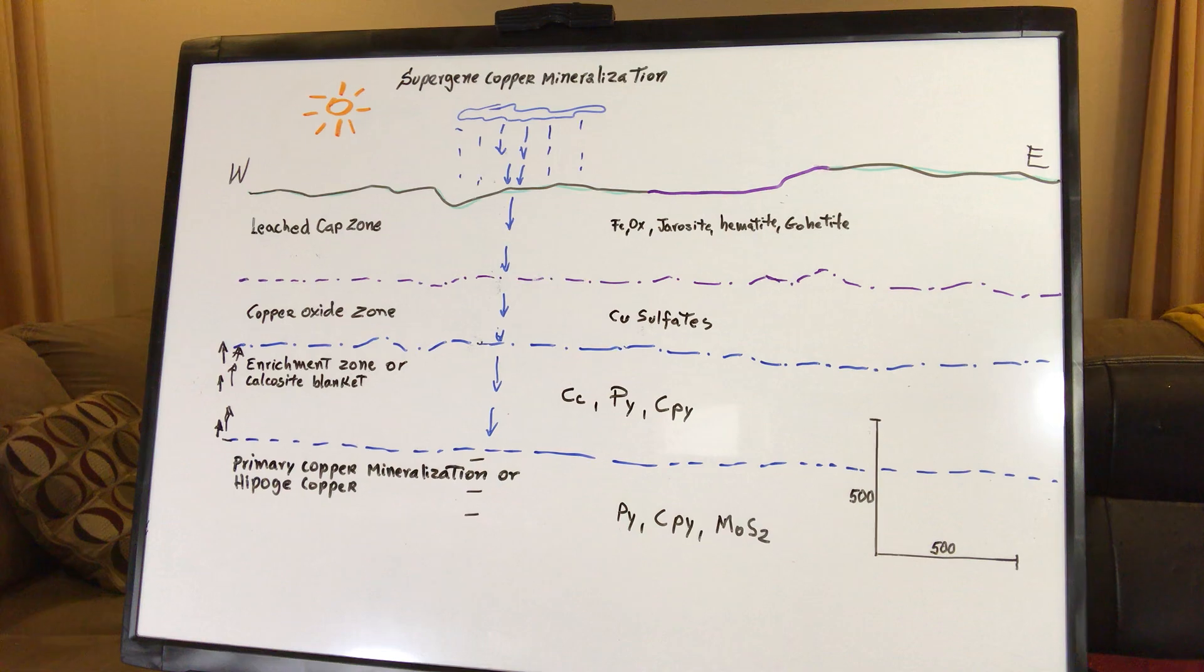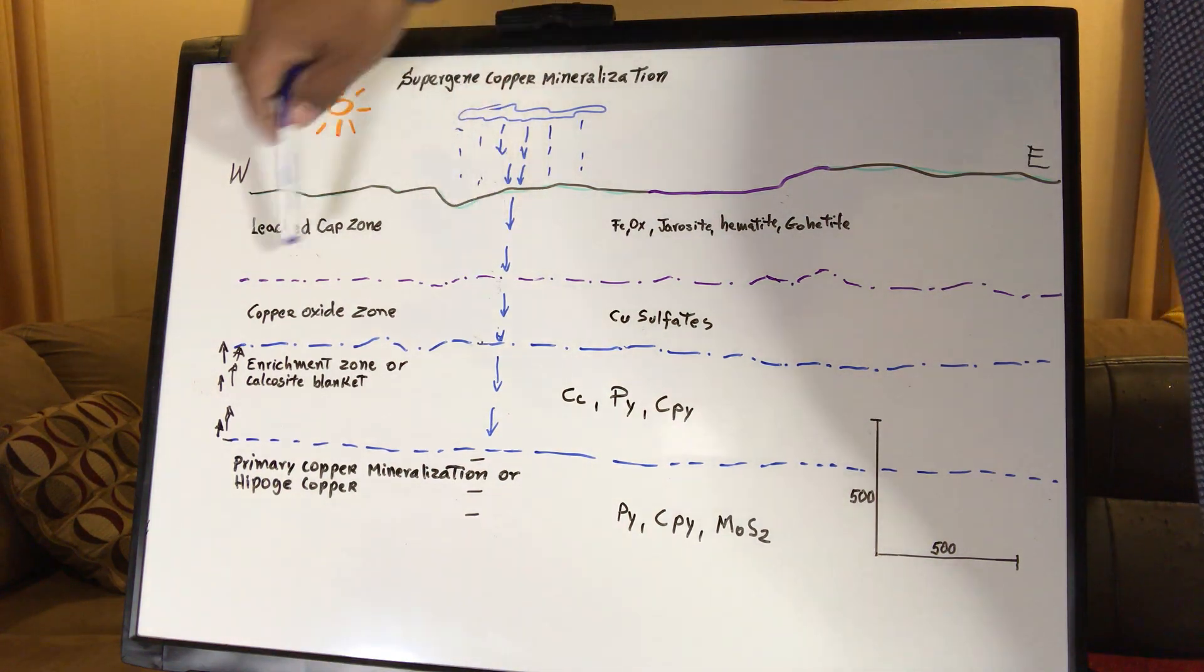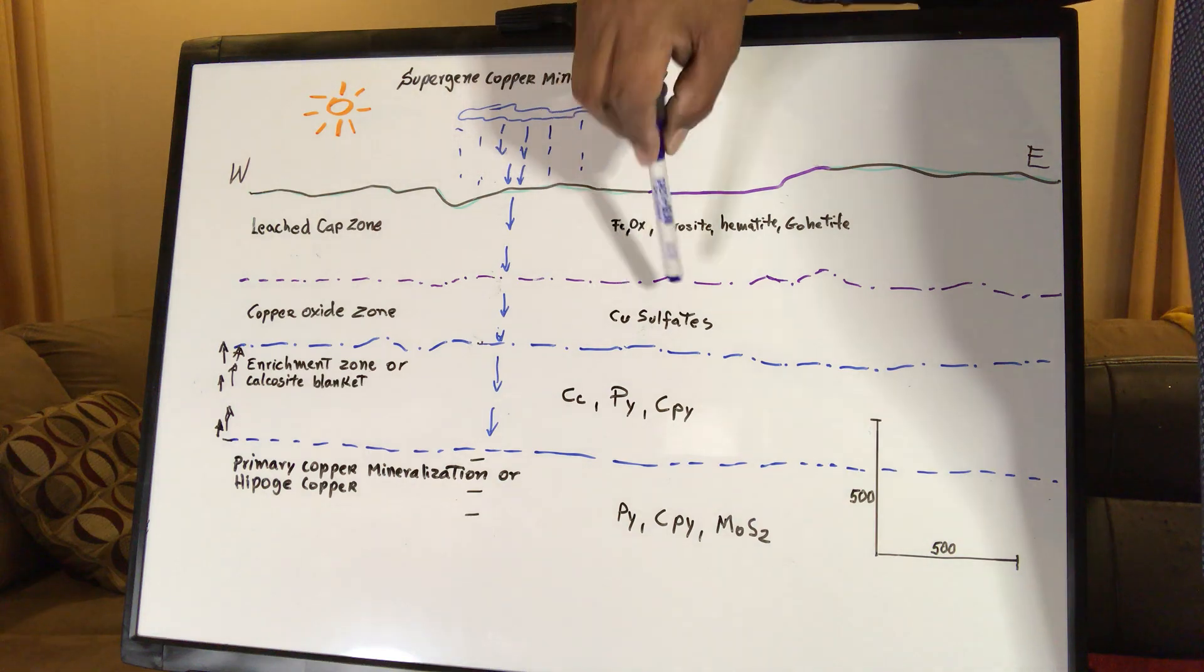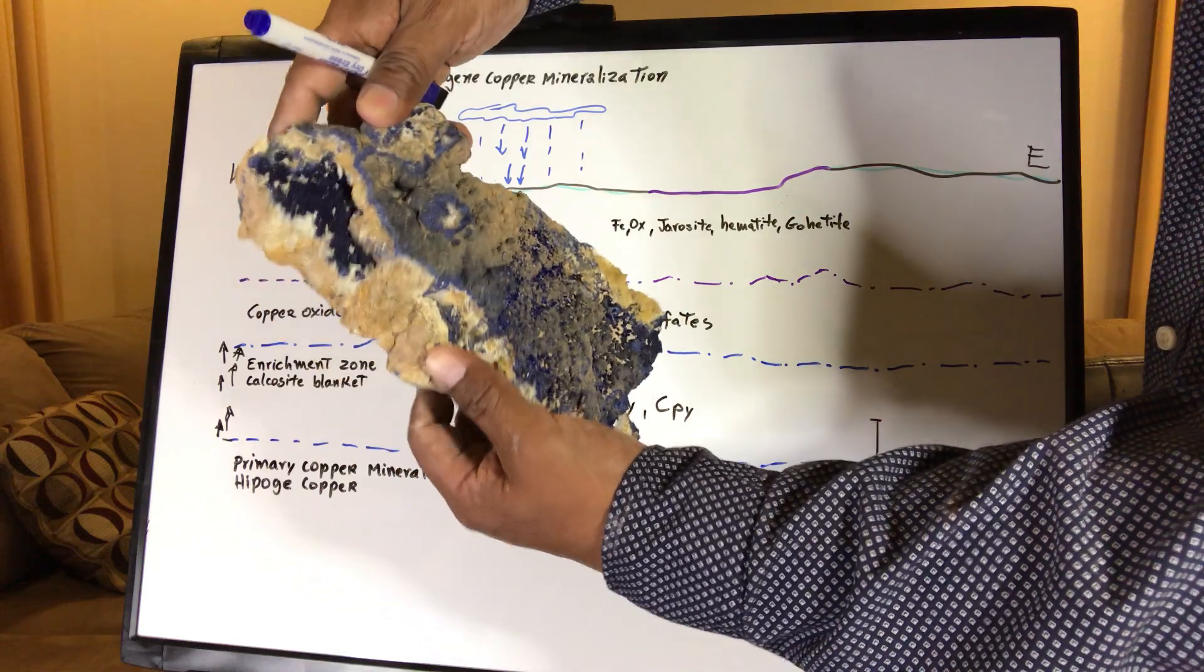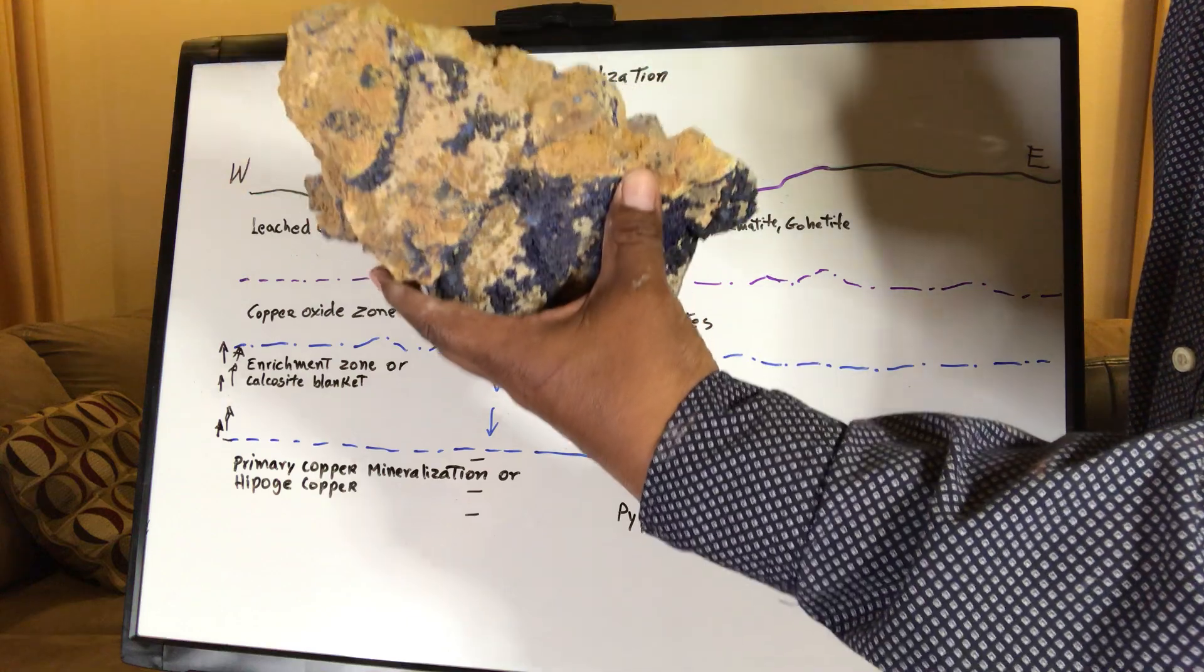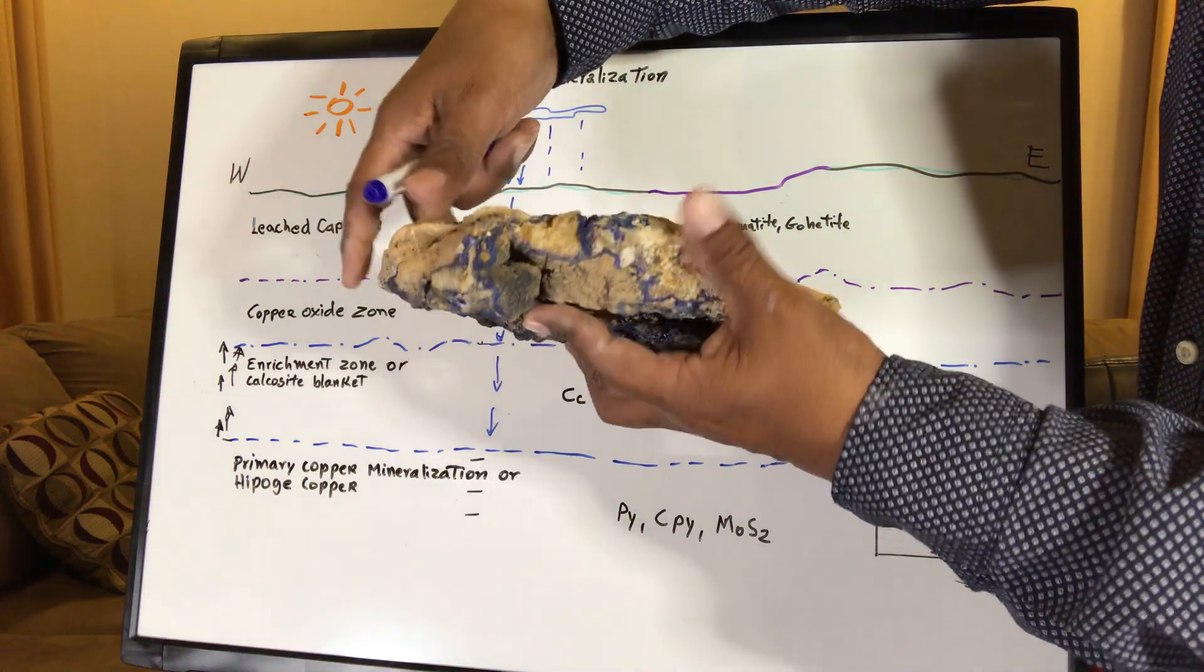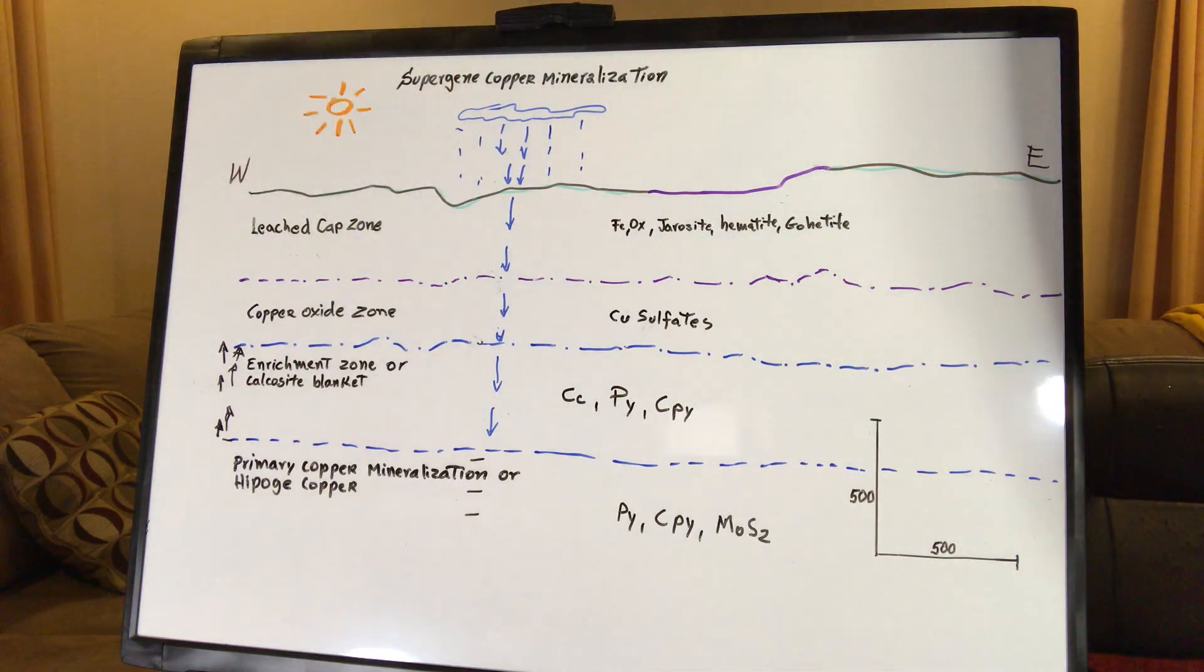The next one, if the water takes the copper sulfides deeper, we're going to find a copper oxide zone, which actually we have copper sulfates. Copper sulfates is like this. We saw in the previous video, all the blue copper sulfate. And once again, we have iron oxide, but we don't see any pyrite or chalcopyrite. So everything already has been replaced. That's the copper oxide zone.